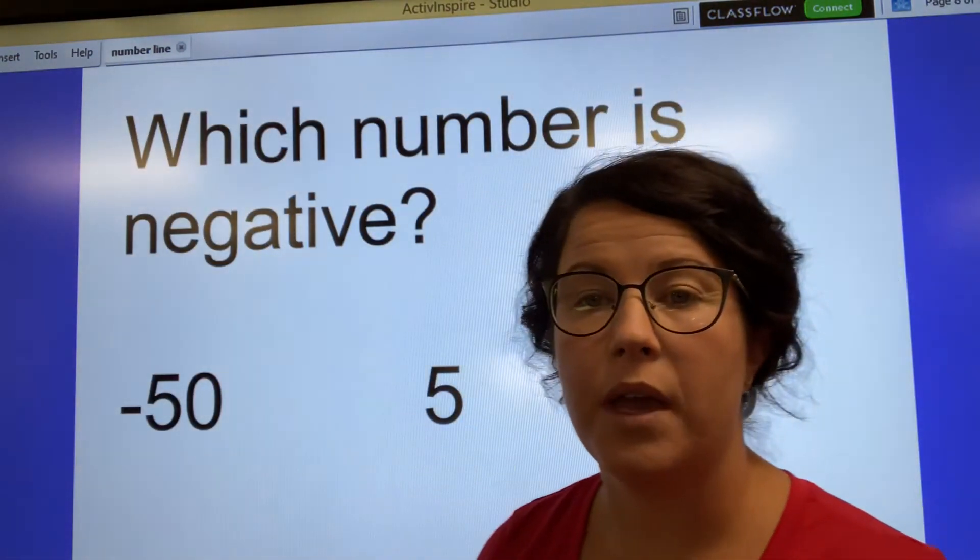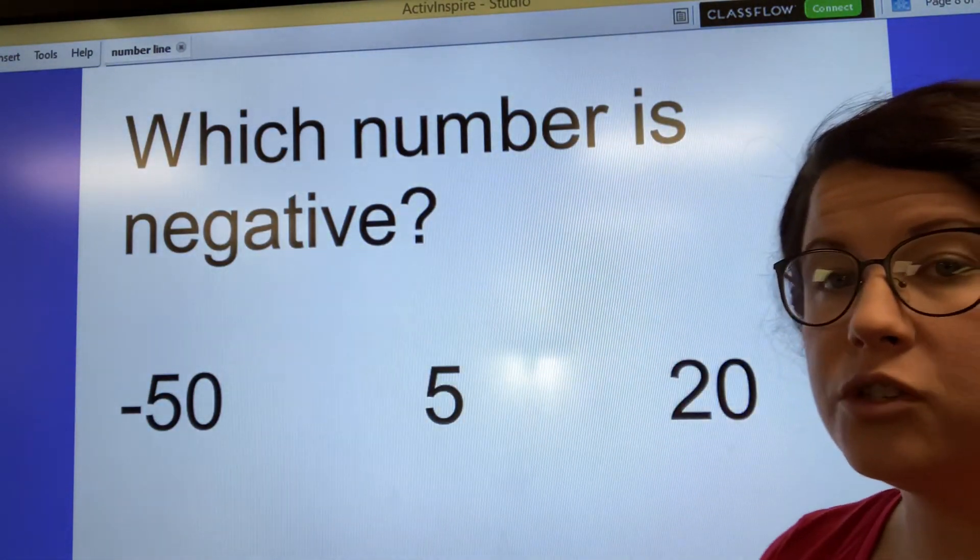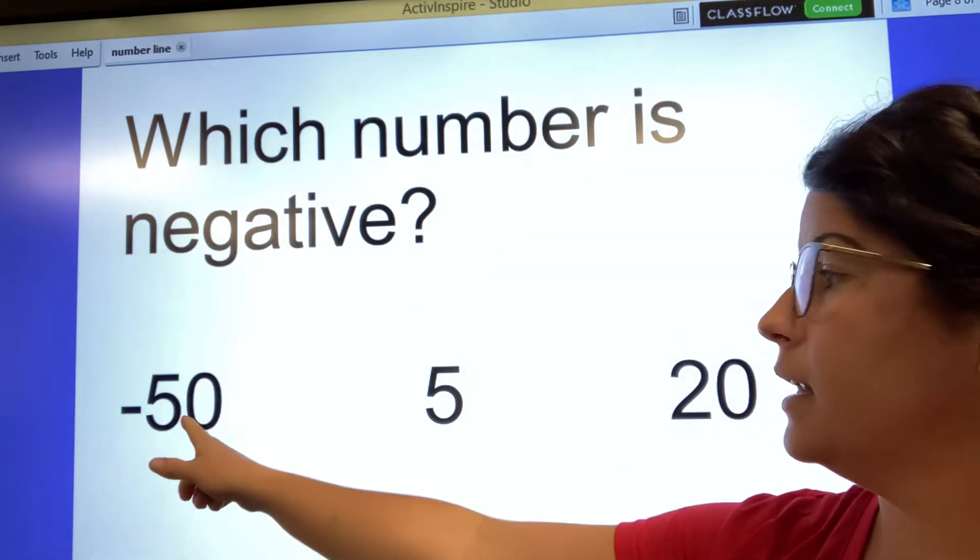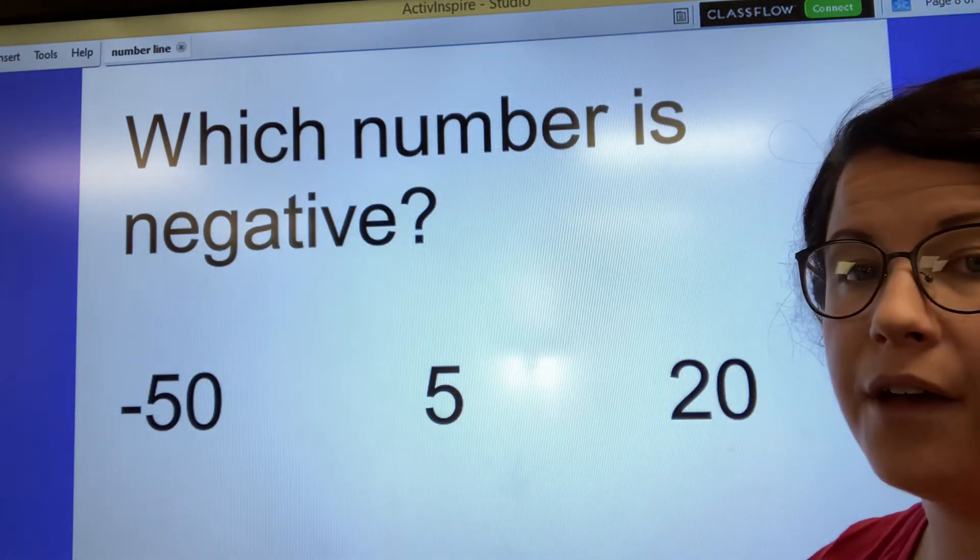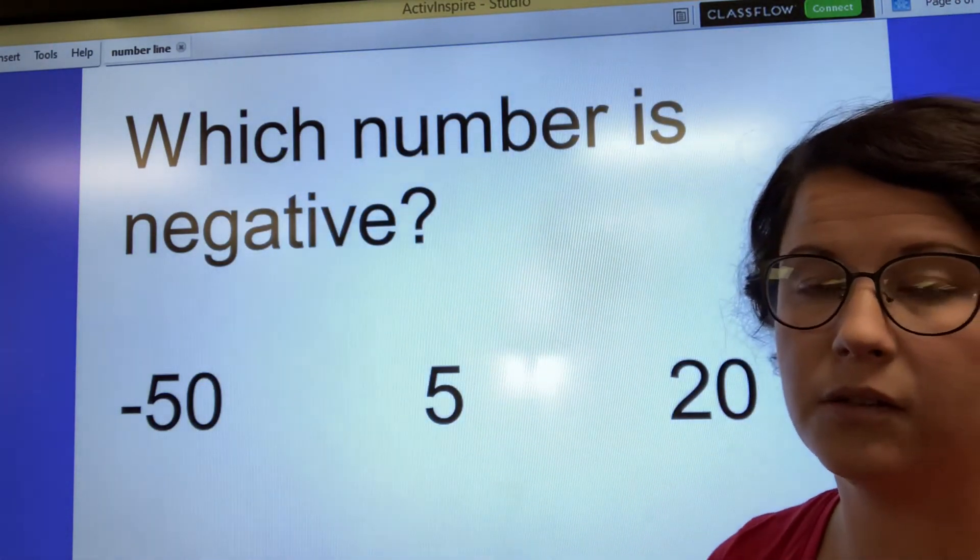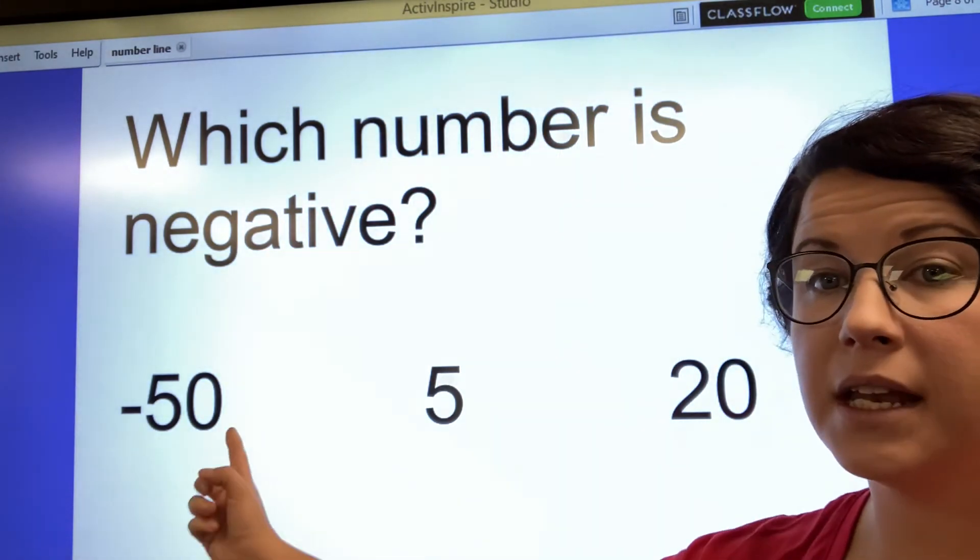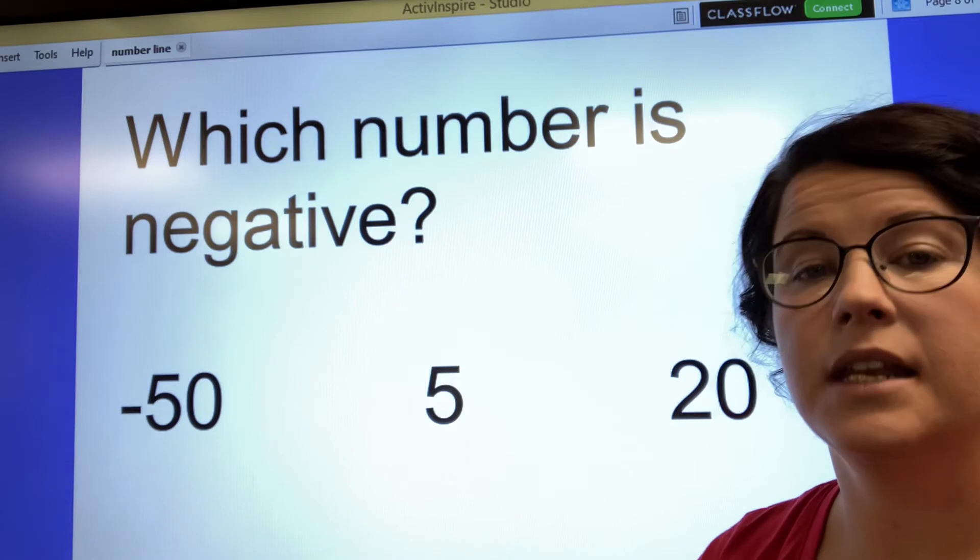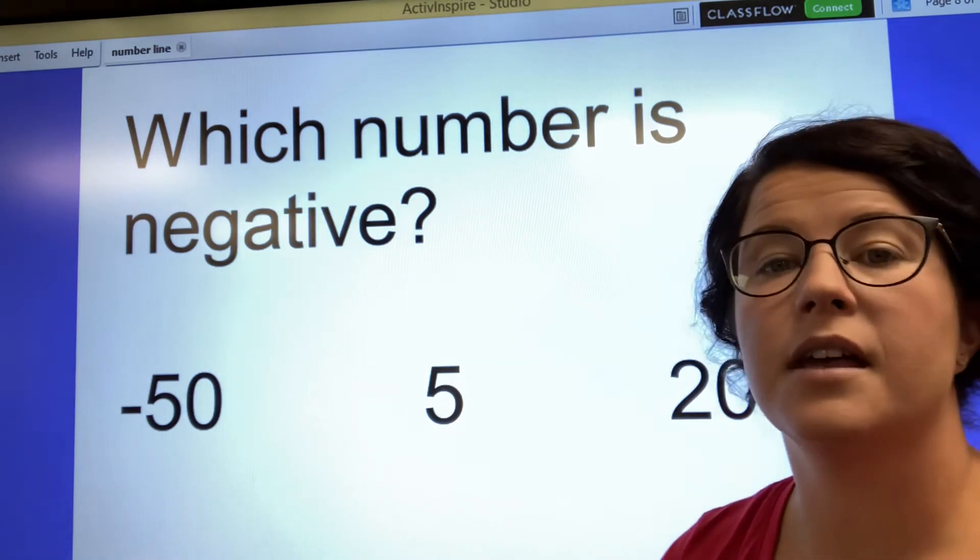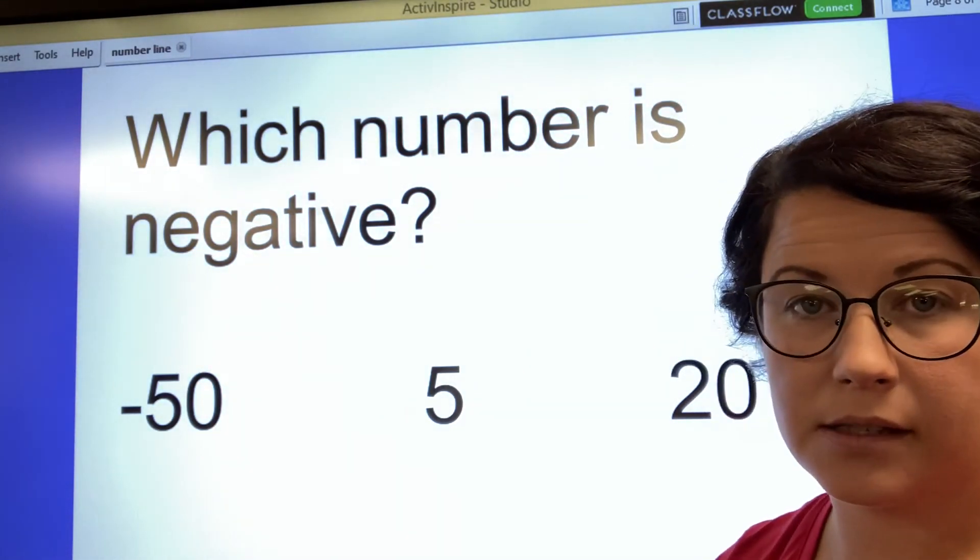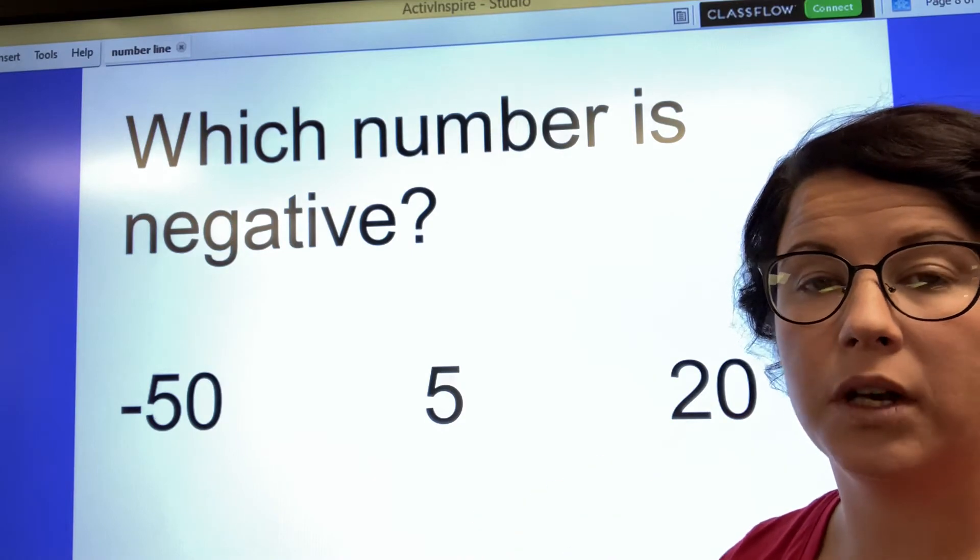So we have three numbers here. Which number is negative? Is it negative 50? Is it 5? Or is it 20? Say your answer out loud. If you said negative 50, you are correct. Negative 50 is the negative number in this set. 5 and 20 are both positive.